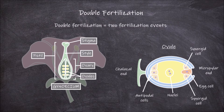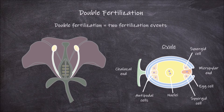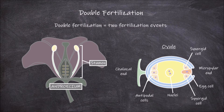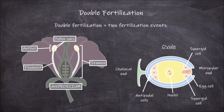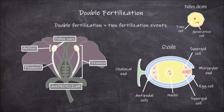The male reproductive organs can be found in the whorls surrounding the female reproductive organs and are called the androecium. The androecium is made up of the stamens. Each stamen consists of a filament with an anther on the end. The anther is made up of pollen sacs that hold the pollen grains. Each pollen grain has a generative cell and a tube cell.